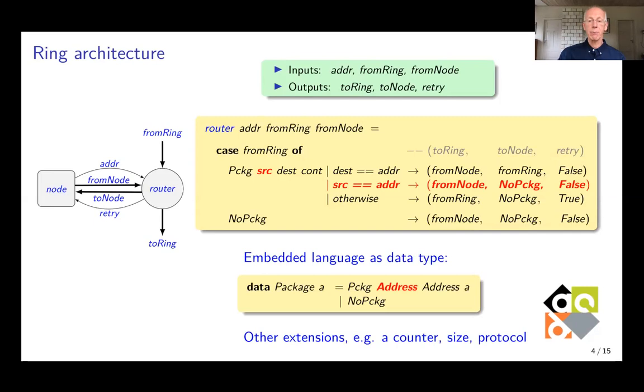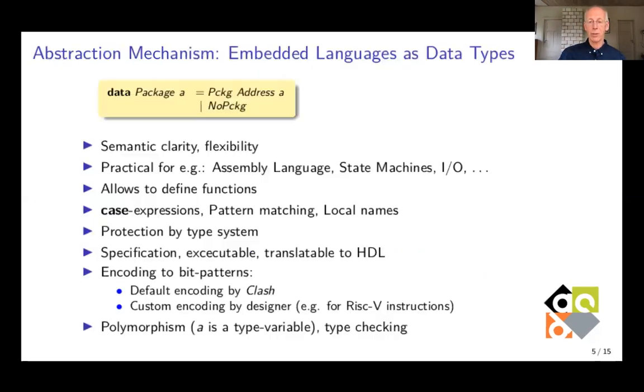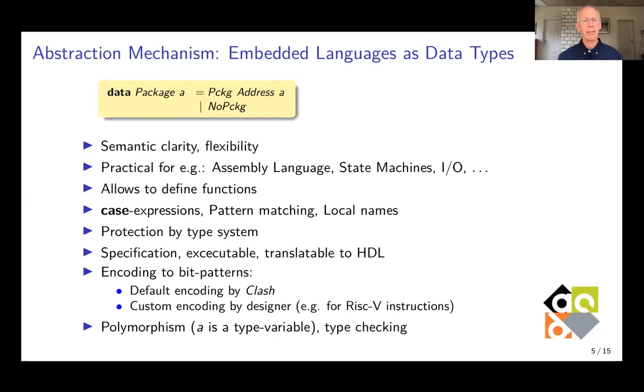Of course, you can have other extensions, for example, for a counter, for the size of the package, for the protocol and so on. That abstraction mechanism for embedded languages gives you a lot of semantic clarity. It's very flexible and very pleasant to specify your designs. It's very practical, for example, in the case of an assembly language for some CPU, because every instruction can then be modeled as a clause in that data type and registered addresses and so on will be parameters to the constructor of that clause. It's just a normal data type, so you can define functions on it. In your case expression, you can do pattern matching all the clauses and give local names to the different fields just as we saw before.